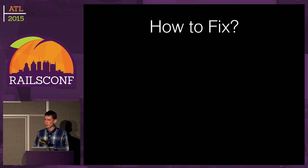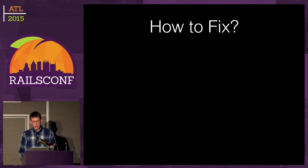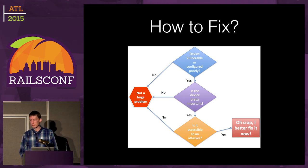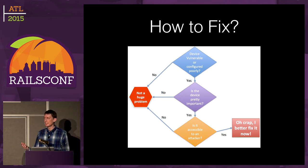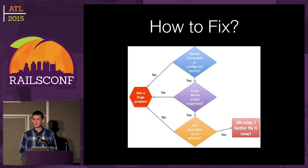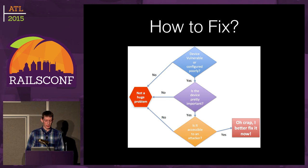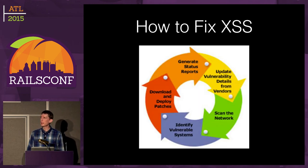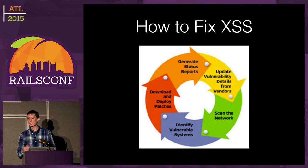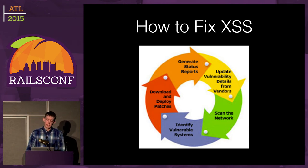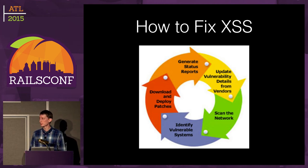So how can we fix this? With cross-site scripting we go through our processes, ask ourselves if we're actually vulnerable — yes it looks like it. Is it important? It's our homepage. Is it accessible by the internet? We have to do something. Now we've got to go through our cycle of patching, testing, deploying, testing in production. Not very much fun — taking our time away from building the awesome new features our customers want.